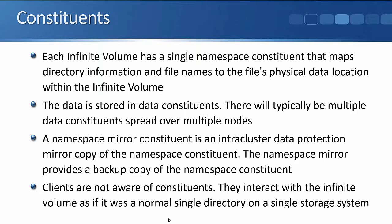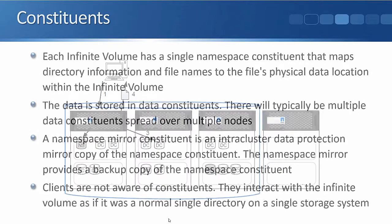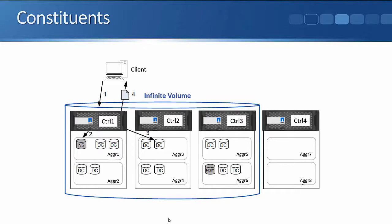Data is stored in data constituents — there will typically be multiple data constituents spread over multiple nodes. A namespace mirror constituent is an intra-cluster data protection mirror copy of the namespace constituent. The namespace mirror provides a backup copy of the namespace constituent, because if we only had a single copy that would be a single point of failure. Your clients are not aware of constituents; these are transparent to clients, who interact with the infinite volume as if it were a single normal directory on a single storage system.